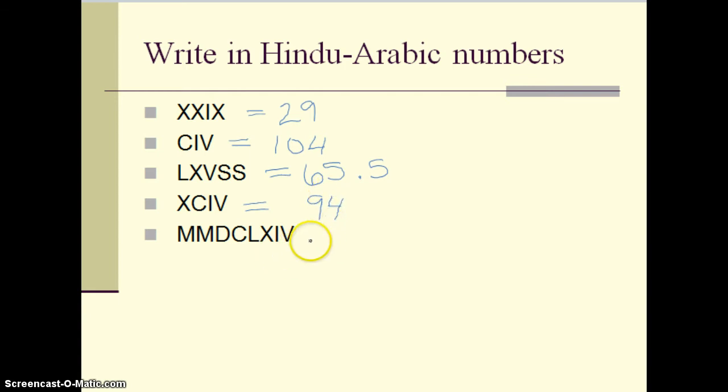Last one. Looks intimidating, but we can do this. You might want to pause and try it on your own. So 1,000, millennium. 2,000, 2 millennium, so 2,000. Next, we have this D, which is 500. C, which is another 100, so we're adding that, so 600. L is 50, and then we have 10, so we're adding that 50 plus 10, 60. And then we have I in front of the V, so we're subtracting that, so 5 minus 1 is 4.